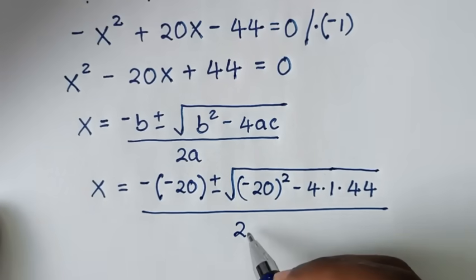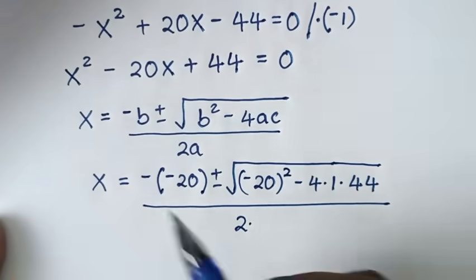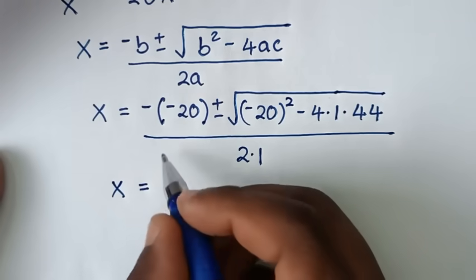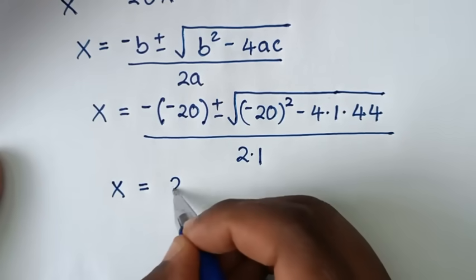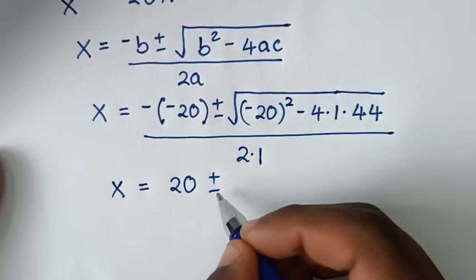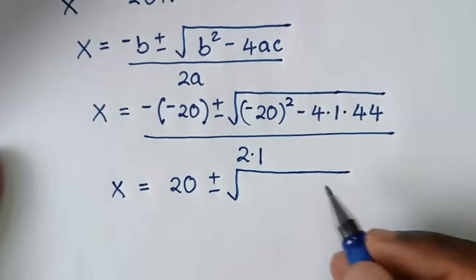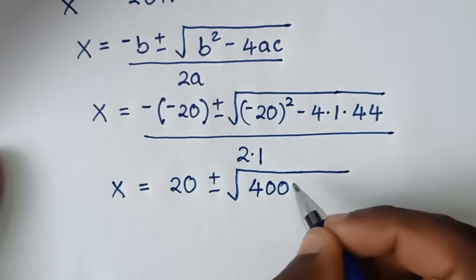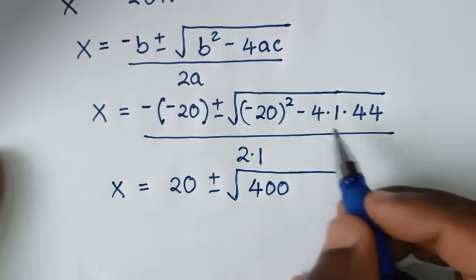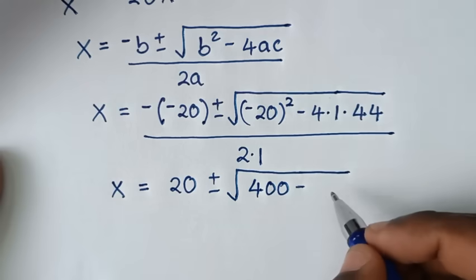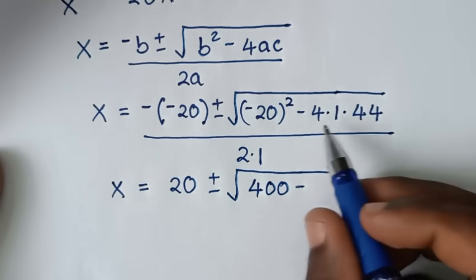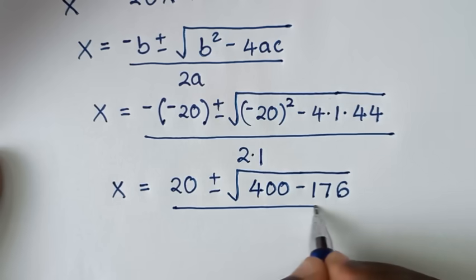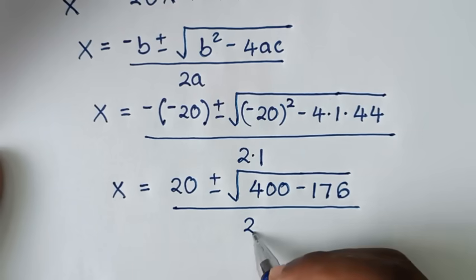Substituting into the formula: x equals negative (negative 20), plus or minus square root of (negative 20) squared minus 4 times 1 times 44, all over 2 times 1. That gives x equals 20 plus or minus square root of 400 minus 176, over 2.